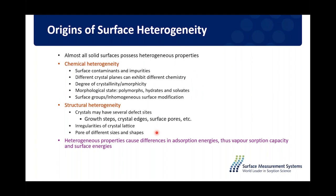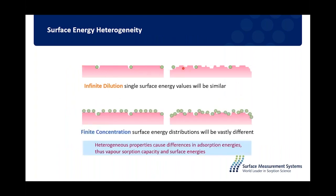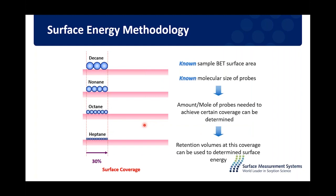We can also look at surface energy heterogeneity. As most materials are energetically heterogeneous, describing them by a single value does not always show the full picture. Inverse GC, unlike other surface energy techniques, can show this energetic heterogeneity. As shown in this cartoon, two surfaces might have the same average surface energy, but if you investigate the entire surface you can see the two surfaces are actually quite different. We do a series of experiments at different surface coverages, varying the ratio of probe molecule to surface, to build up an energetic heterogeneity profile.